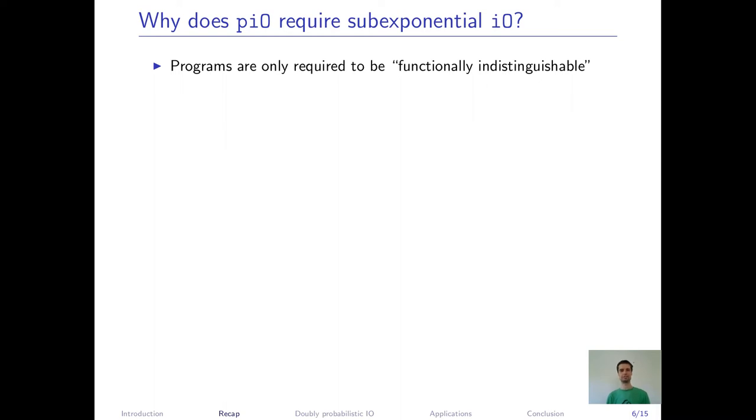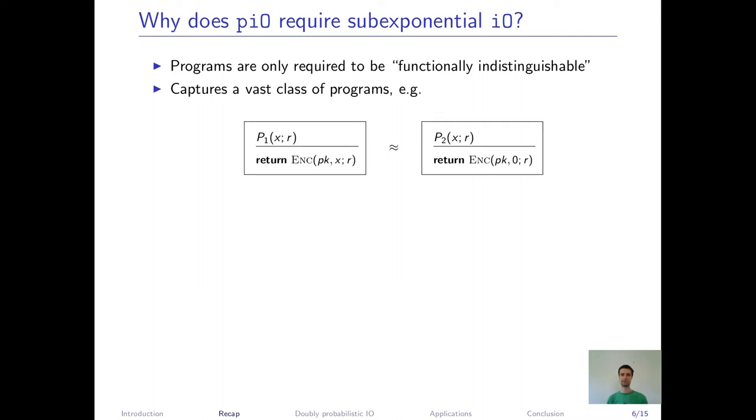But why does this notion of probabilistic I.O. require sub-exponential I.O.? P.I.O. provides this indistinguishability guarantee even if the obfuscated programs satisfy this rather weak functional indistinguishability requirement. And this captures a vast class of programs. For instance, programs which output an encryption are always functionally indistinguishable, even if what's encrypted varies a lot amongst these programs, maybe even if their output supports are disjoint because they encrypt different messages.